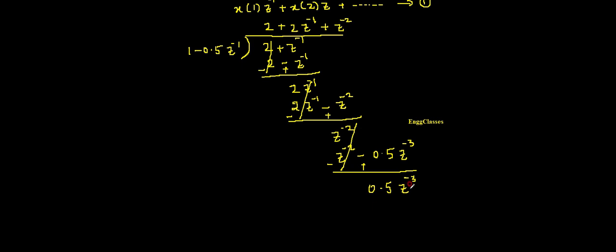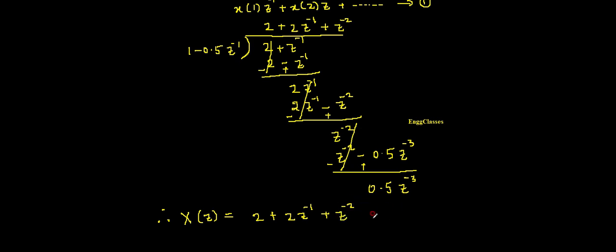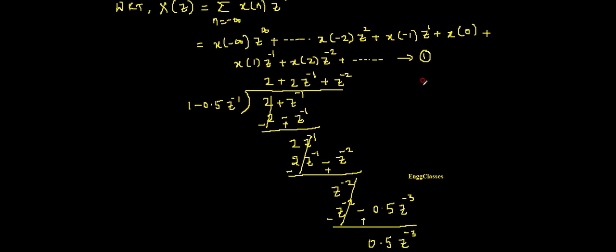Therefore, X(z) equals the quotient we obtained: X(z) = 2 + 2z⁻¹ + z⁻² + ... Now we compare this result with equation number 1 to identify the values of x(n).